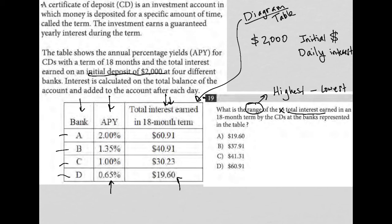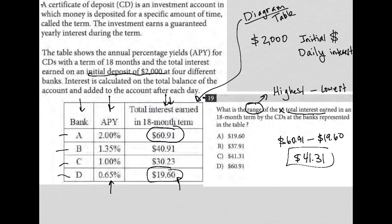The highest total interest earned is $60.91. So it's $60.91 minus the lowest earned, which is $19.60 at the bottom of the chart. We go to our calculators: $60.91 minus $19.60. The range is $41.31. Therefore the correct answer is choice C.